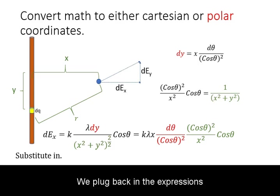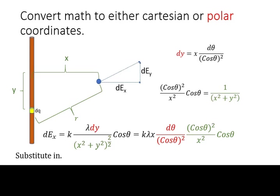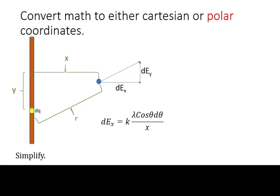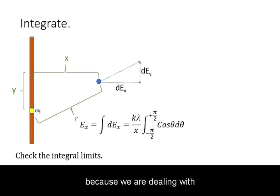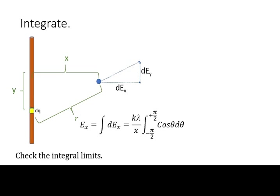We plug back in the expressions for the variables and simplify. This is a straightforward integration, but check the limits carefully. Note that in this case, because we are dealing with an infinitely long charge, the angle limits are between negative pi over 2 and positive pi over 2.